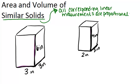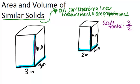So these two square-based prisms are similar because if you look at all their corresponding edges, like 3 to 2, 3 to 2, 6 to 4, they all are in the same ratio — the ratio of 3 to 2. And remember that 6 to 4 reduces to 3 over 2. So that means the scale factor is 3 over 2. So what we're going to do now is look at the surface area and volume of each to see how those calculations relate to the scale factor.